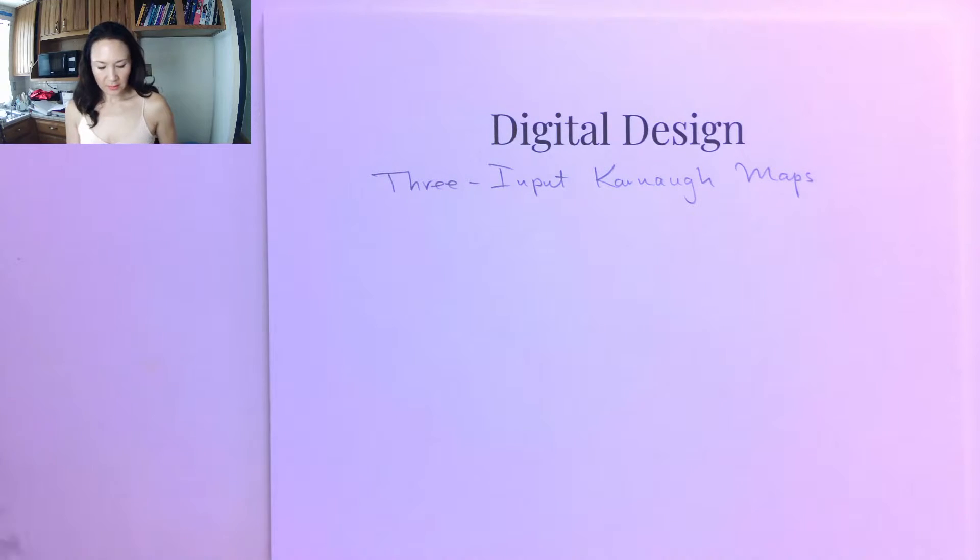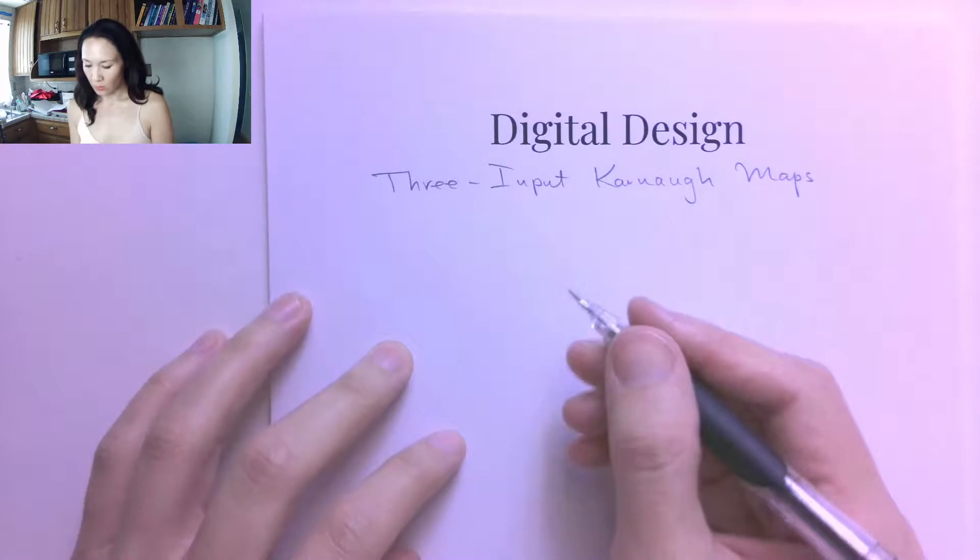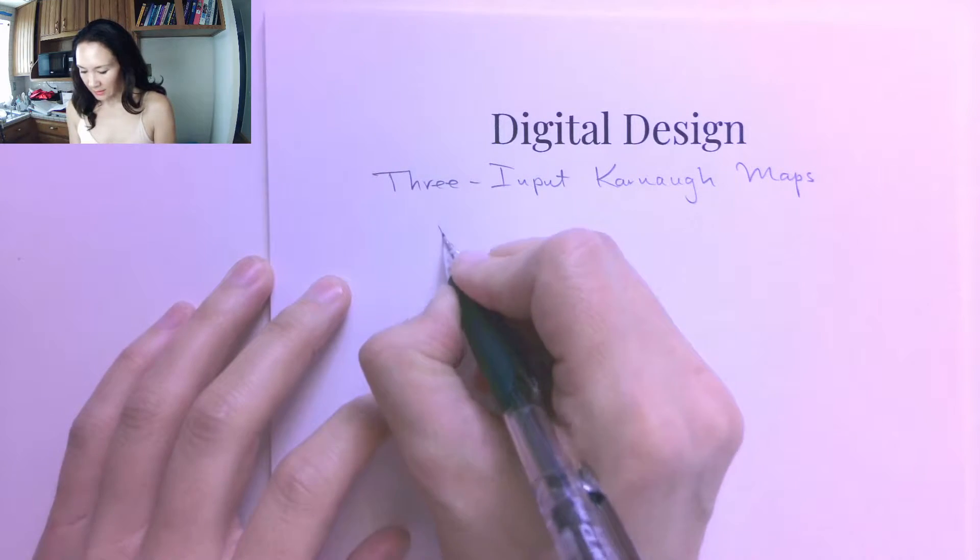There are a couple ways to make these three input Karnaugh maps. You can orient them vertically or you can orient them horizontally. I like to do them horizontally.